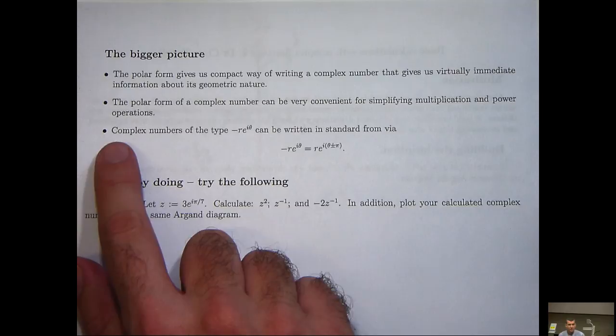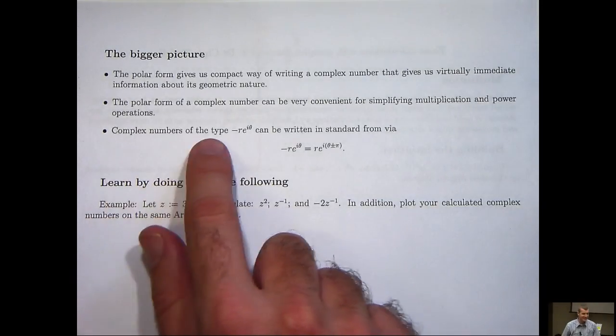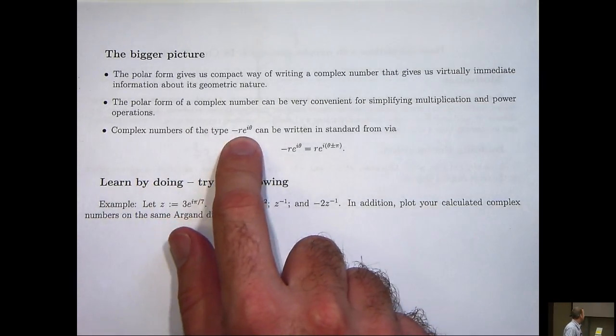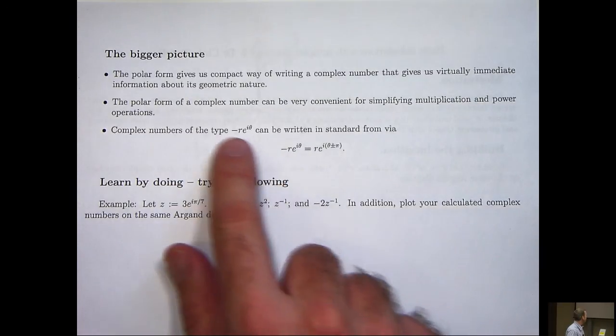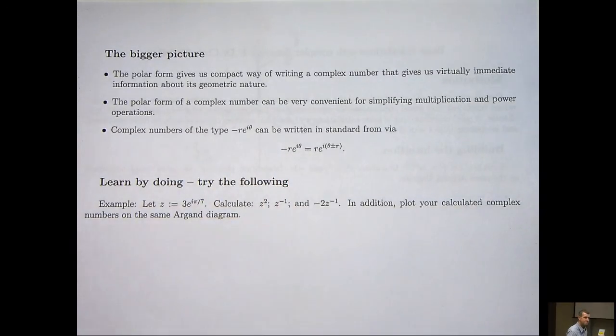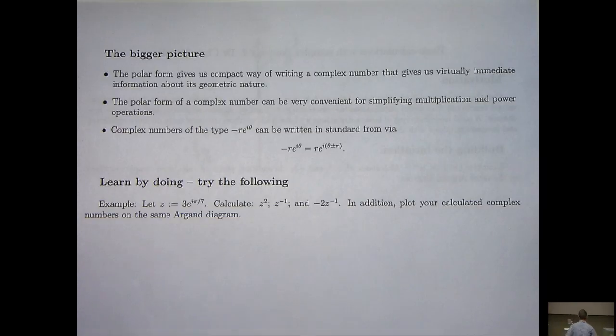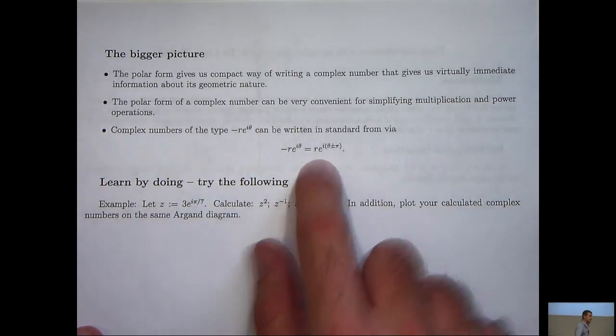And finally, as we saw in our example, you can write complex numbers of this type by just using -1 equals e^(iπ) or e^(-iπ), depending on what's more useful.